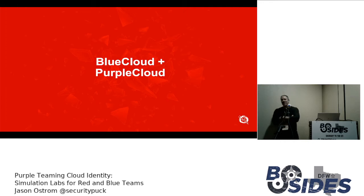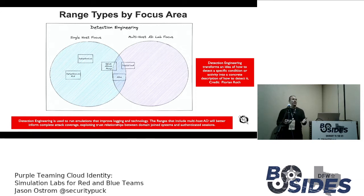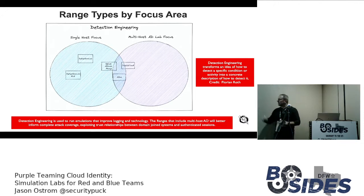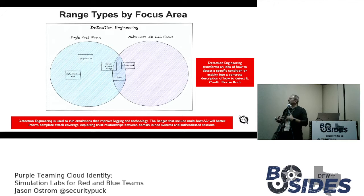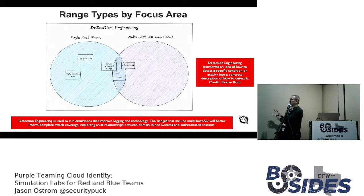Now we get to the purpose of this — Blue Cloud and Purple Cloud. We need to distinguish between different simulation labs. On the left we have single-host focused tools — Detection Lab and Splunk Attack Range — where you're running attacks on a single host looking at EDR and security bypass. Then ADAS is in the middle, and on the right we have a multi-host Active Directory focus with lateral movement and attacks against domain-joined systems. Purple Cloud is shifting even further to the right, and I'll explain why.